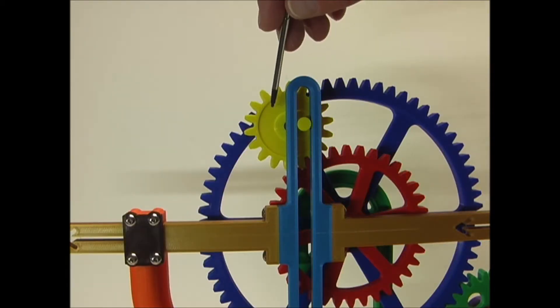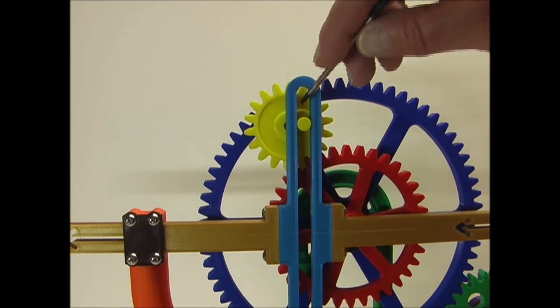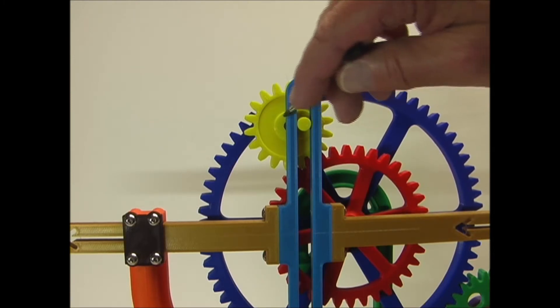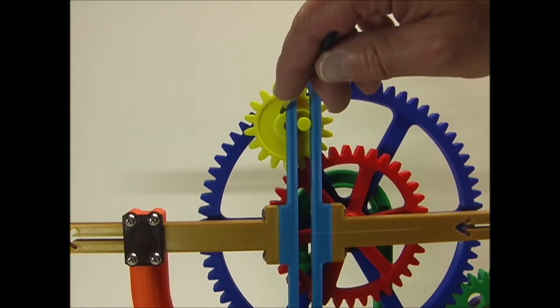This smaller yellow gear is pinned to the outer edge of the large blue gear. On the front side of the yellow gear is this pin, and that rides in the slot of this slider, and the pin is slightly offset from the center of the yellow gear.